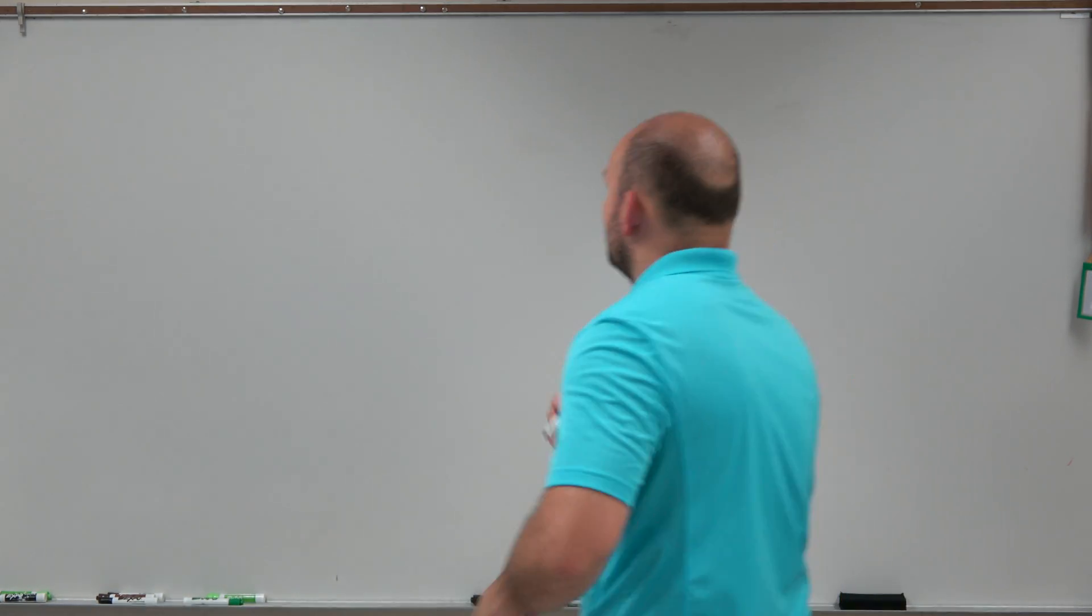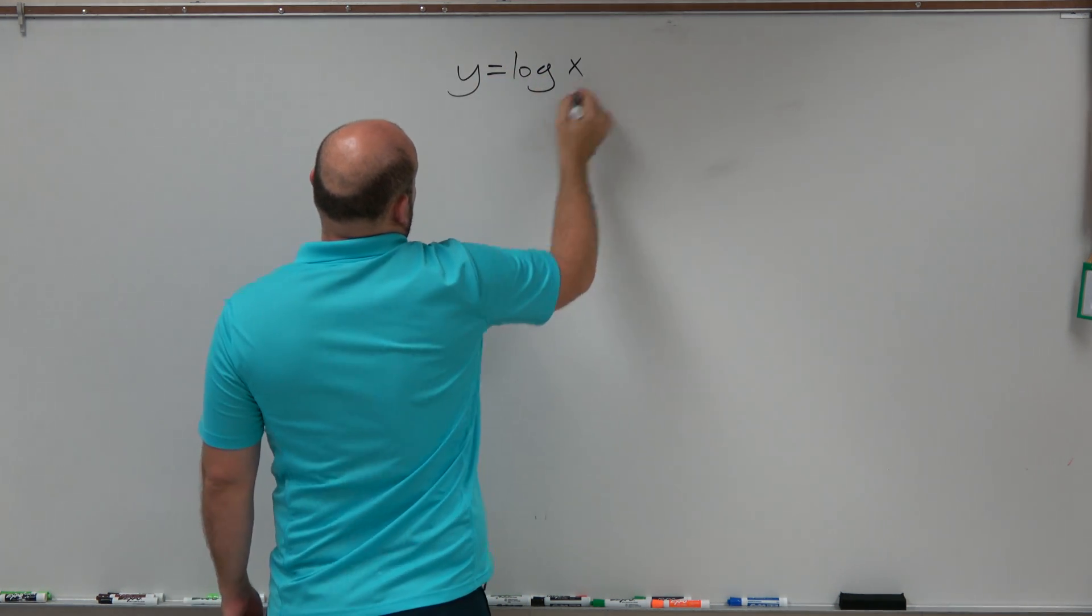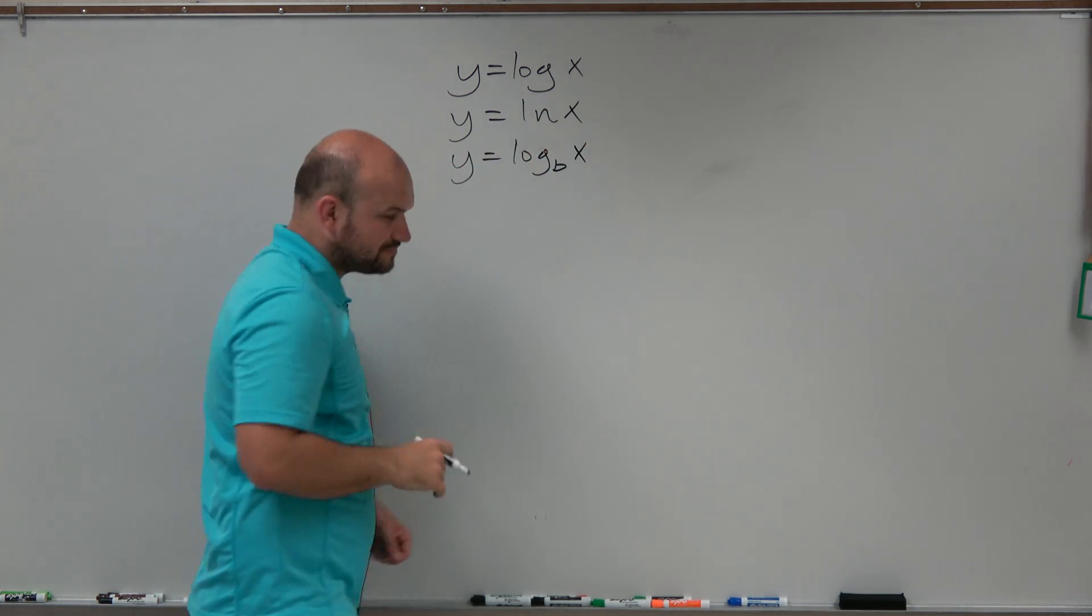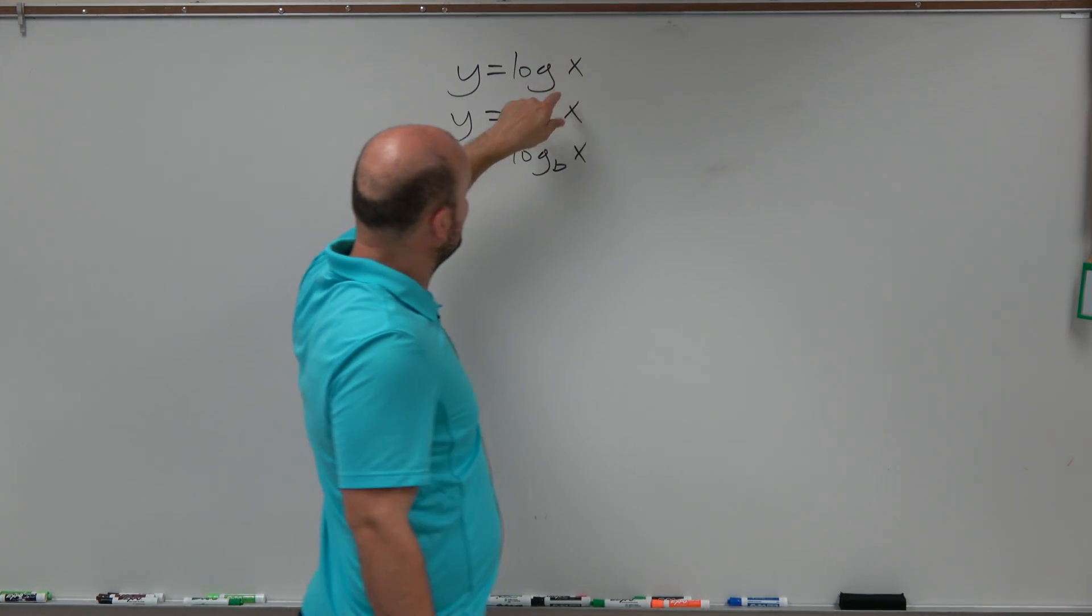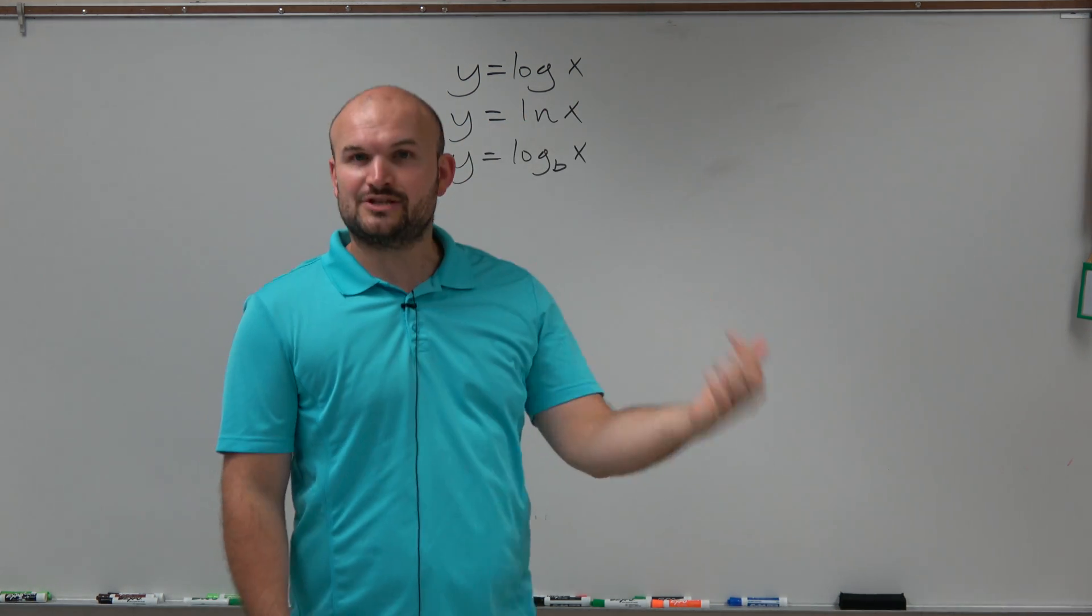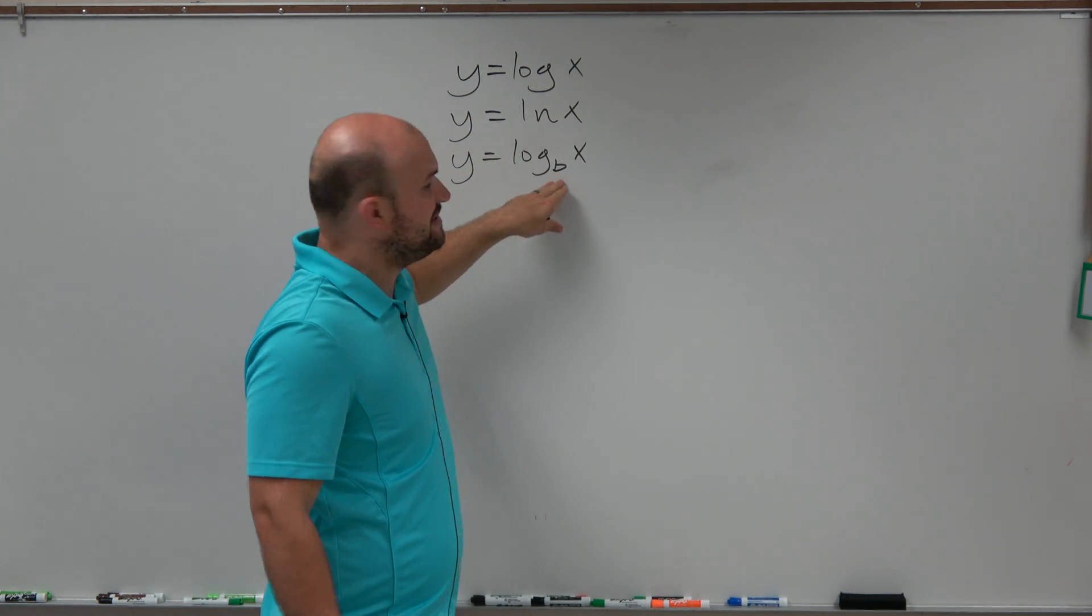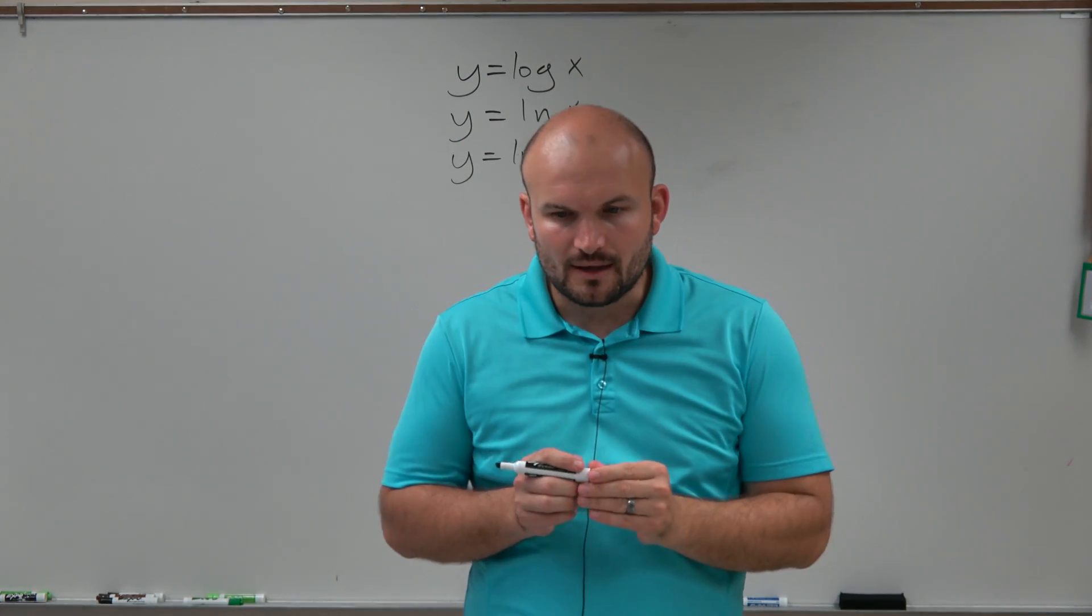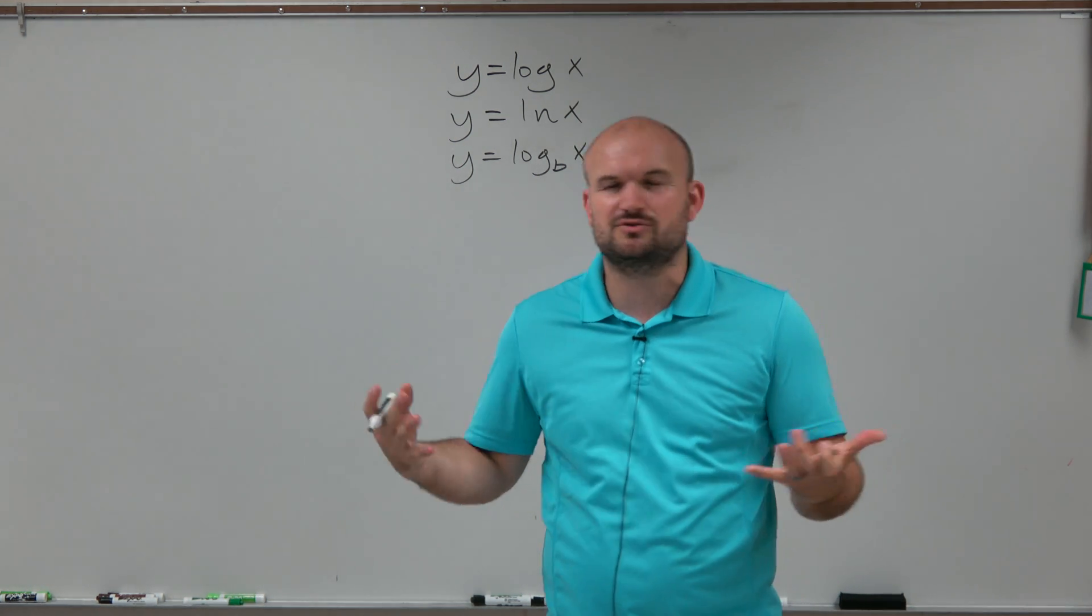So the first thing is, when we're looking at a logarithm, there's a lot of things that you're going to see: y equals log of x, y equals ln of x, y equals log base b of x. These are all different types of logarithmic functions. When it's log of just x, we know that the base is 10. When it's y equals ln, that's what we call the natural logarithm, where the base is e. And if we have log base b, b can represent any number. So I'm going to use some very simple numbers to see what exactly this graph looks like.